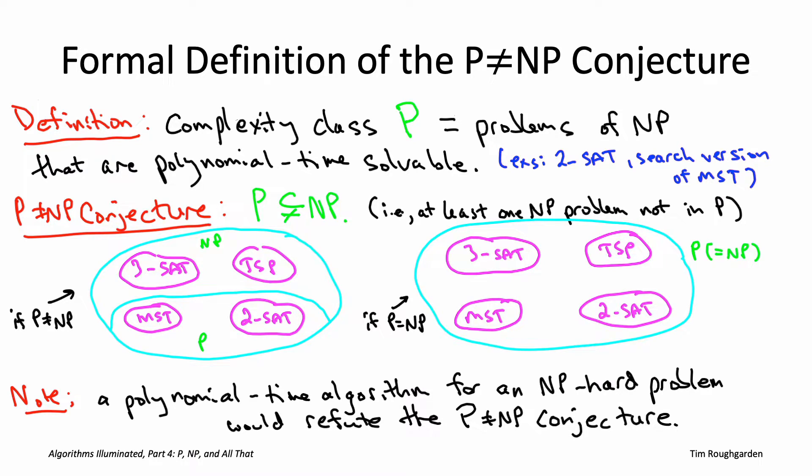Why? Suppose you had a problem like TSP that was NP-hard. By definition, every single problem in the complexity class NP, every search problem with efficiently recognizable solutions, reduces to that NP-hard problem. Now reductions spread tractability. If you had a polynomial time algorithm for the hard problem, for TSP, that would immediately translate into a polynomial time algorithm for all search problems in NP. That would imply P equals NP, and that's what it means to refute the conjecture.